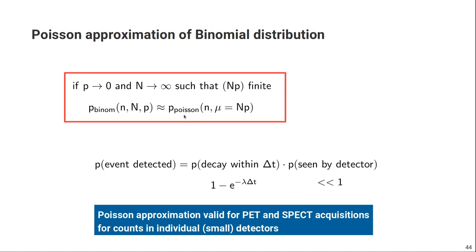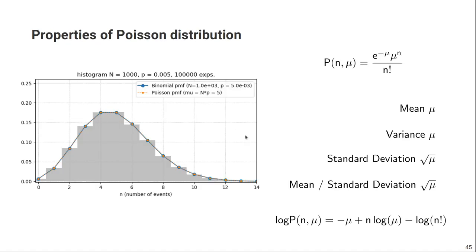The Poisson distribution is simpler than the binomial distribution because it has only one free parameter, mu, which is also the expected value. That means if you know the expectation of your measurement, you know the complete distribution of results if you would repeat the measurement many times. The formula is e to the power of minus mu, times mu to the power of n, divided by n factorial. The mean of the Poisson distribution is mu, the variance is also mu, and therefore the standard deviation is the square root of mu.